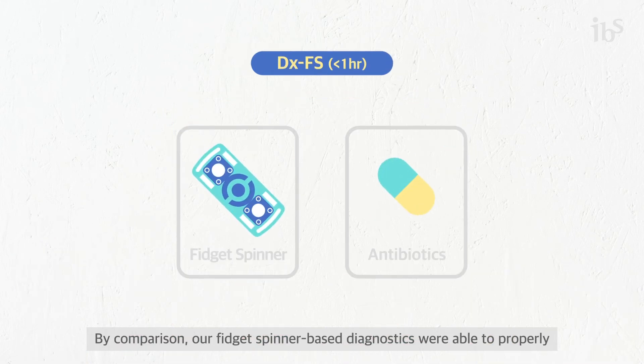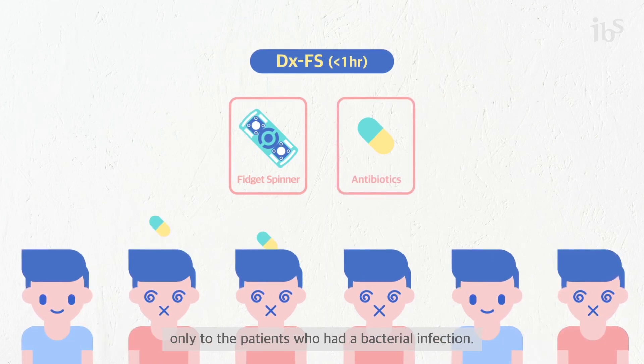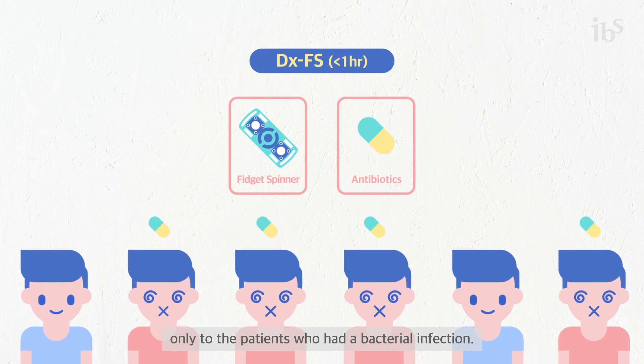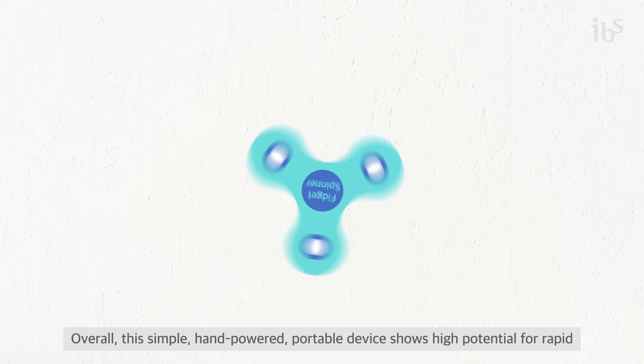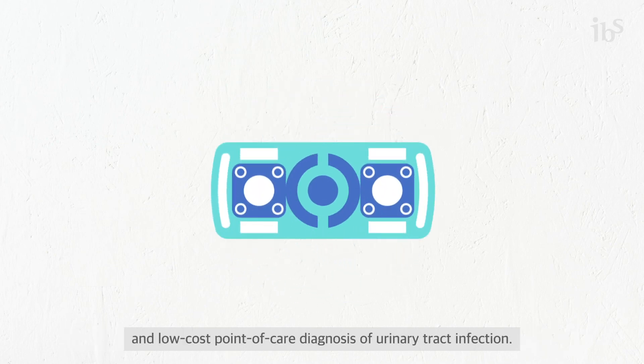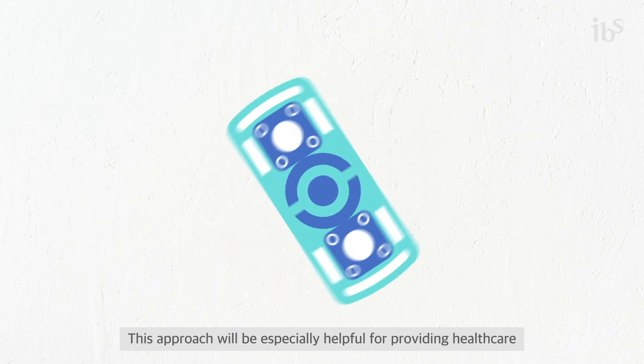By comparison, our fidget spinner-based diagnostics can properly diagnose patients in under one hour, which allows correct prescription of antibiotic treatment only to patients who have bacterial infection. Overall, this simple hand-powered portable device shows high potential for rapid and low-cost point-of-care diagnosis of urinary tract infection.